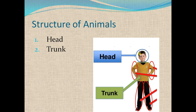In the head region, the sensory organs, brain, and mouth are present. In the trunk region — which is the posterior region of the body — all the body systems and the limbs are present.